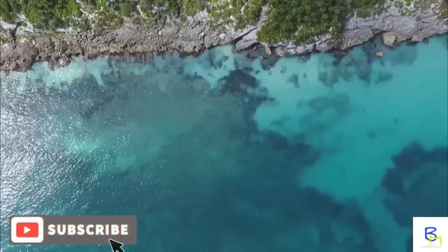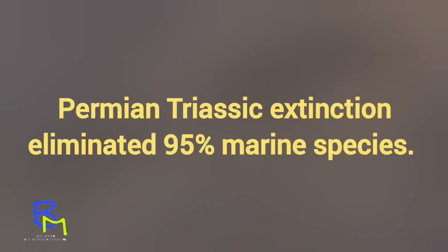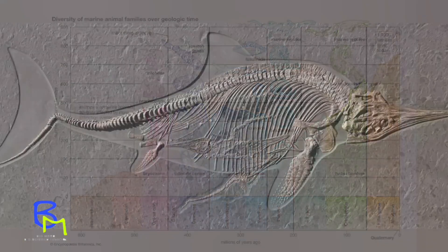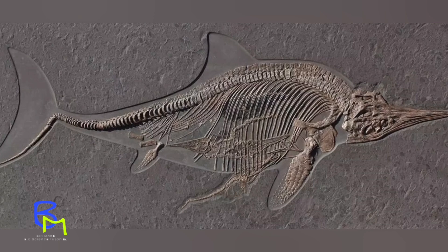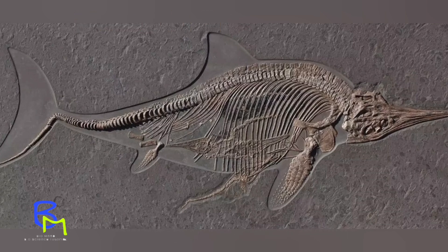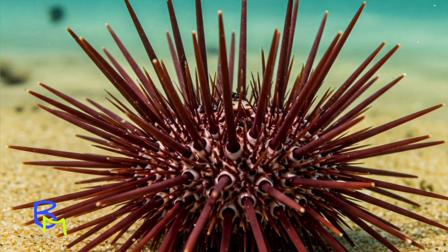In the Jurassic period, dinosaurs were dominant. The Permian-Triassic extinction eliminated 95 percent of marine species. The Mesozoic era was the age of reptiles, characterized by a cool but dry subtropical climate with deserts appearing. The earliest ichthyosaurs and sea urchins first appeared.